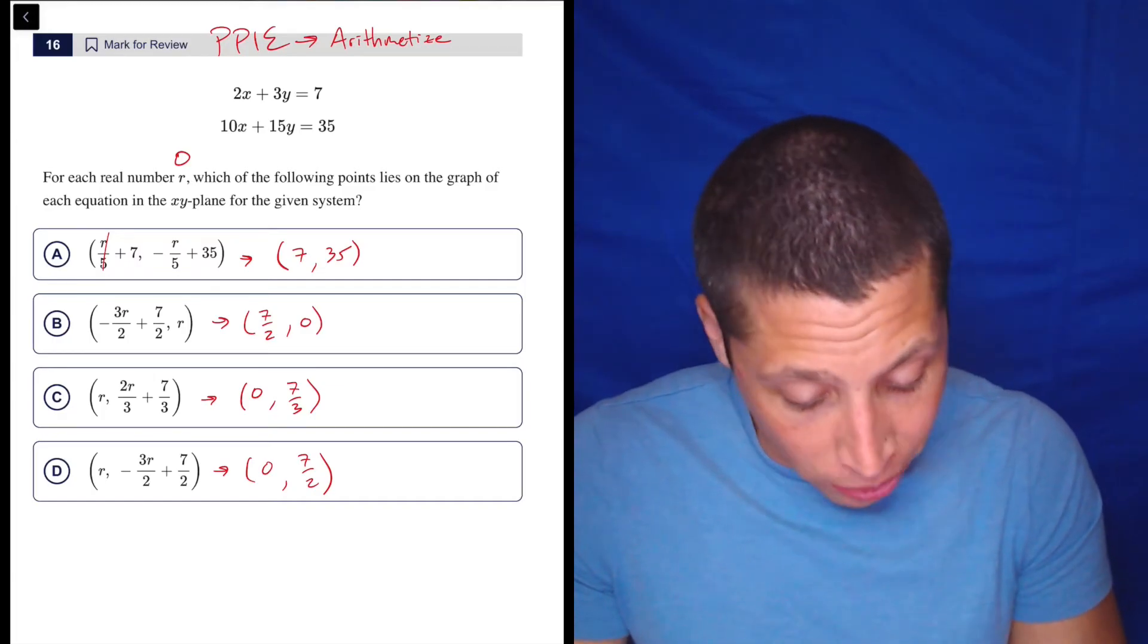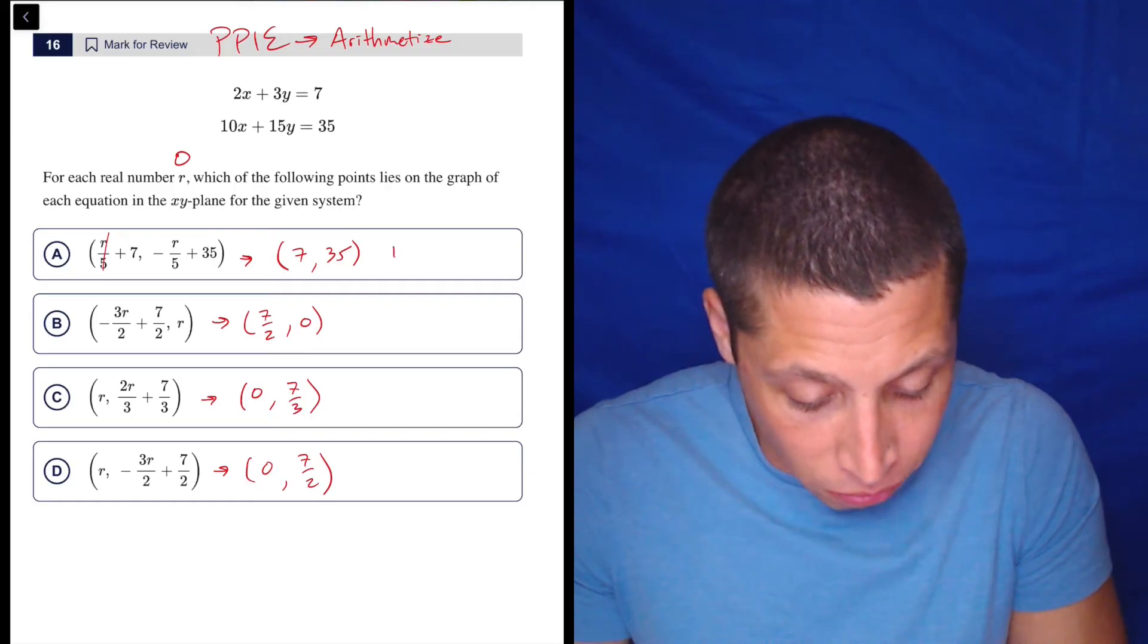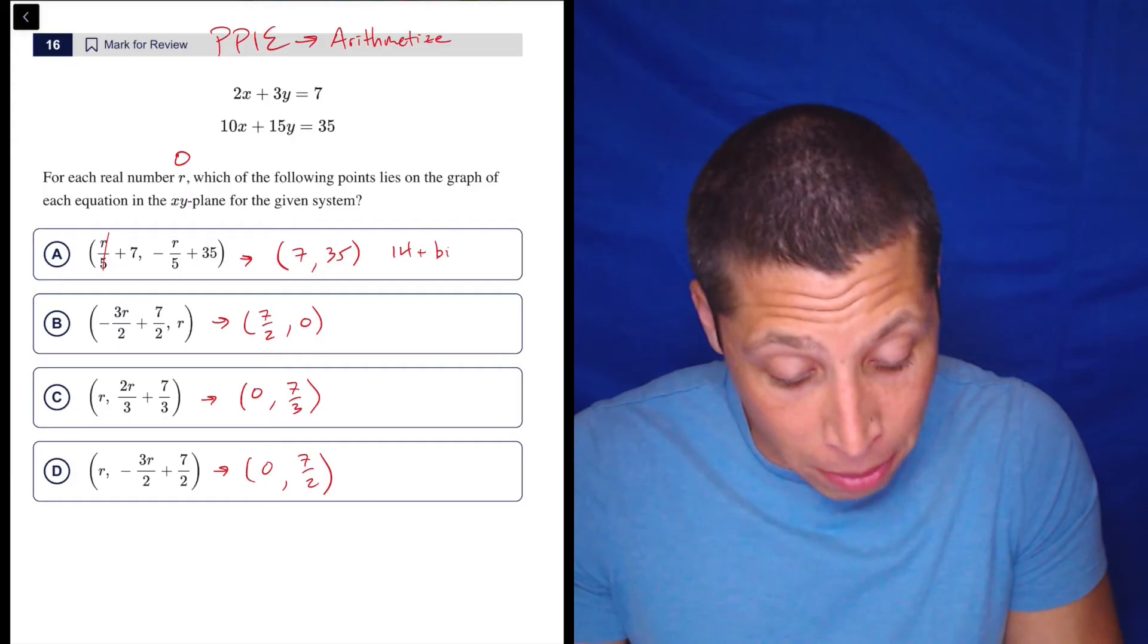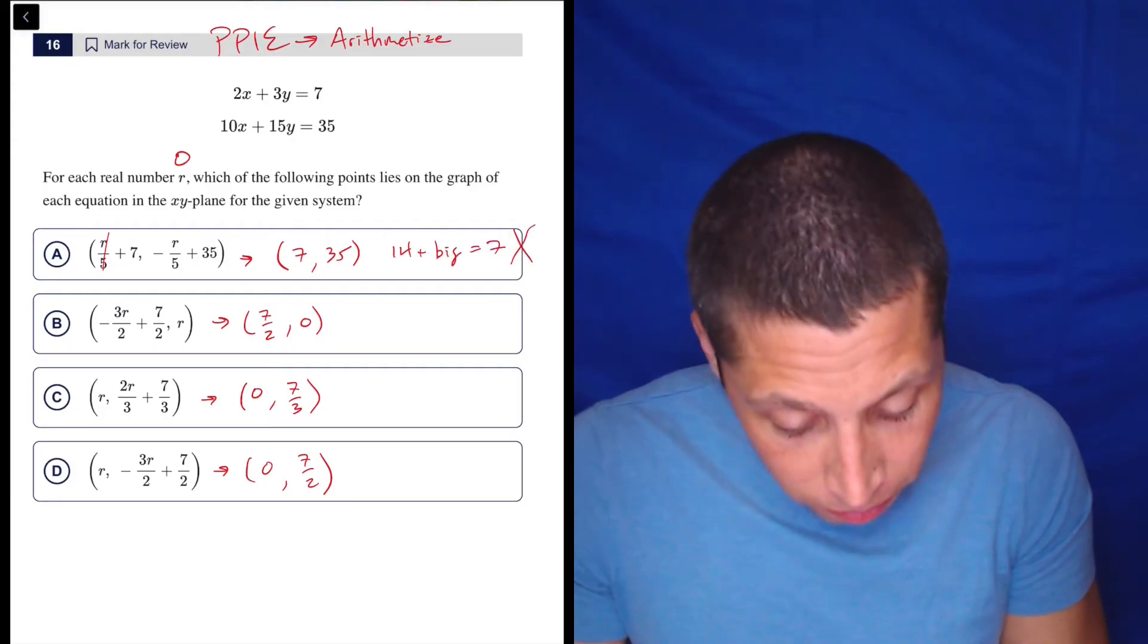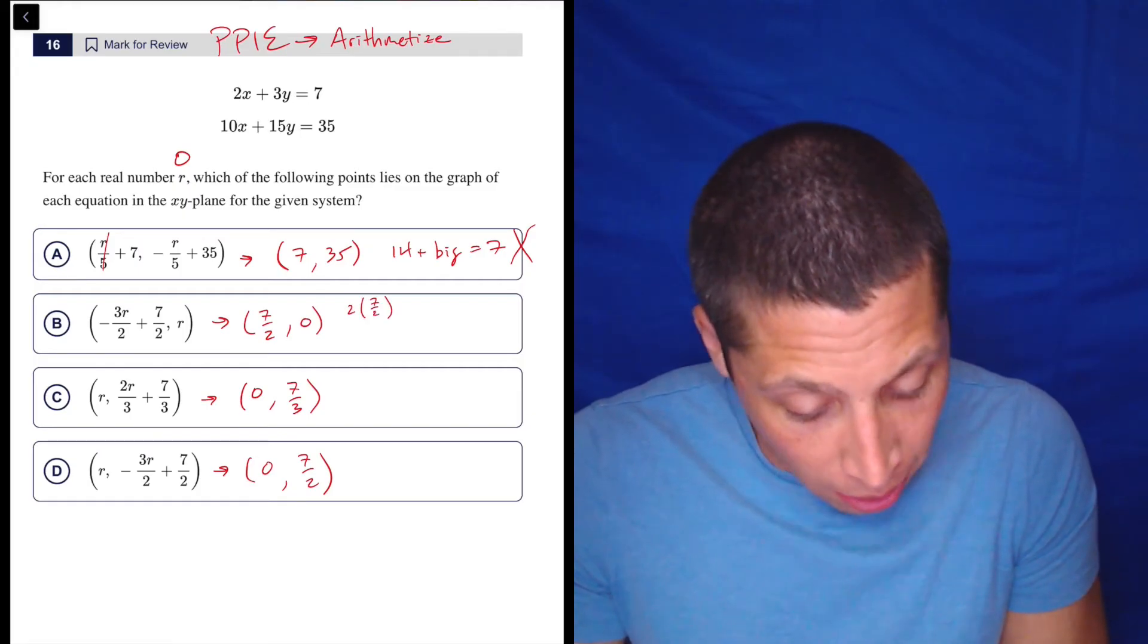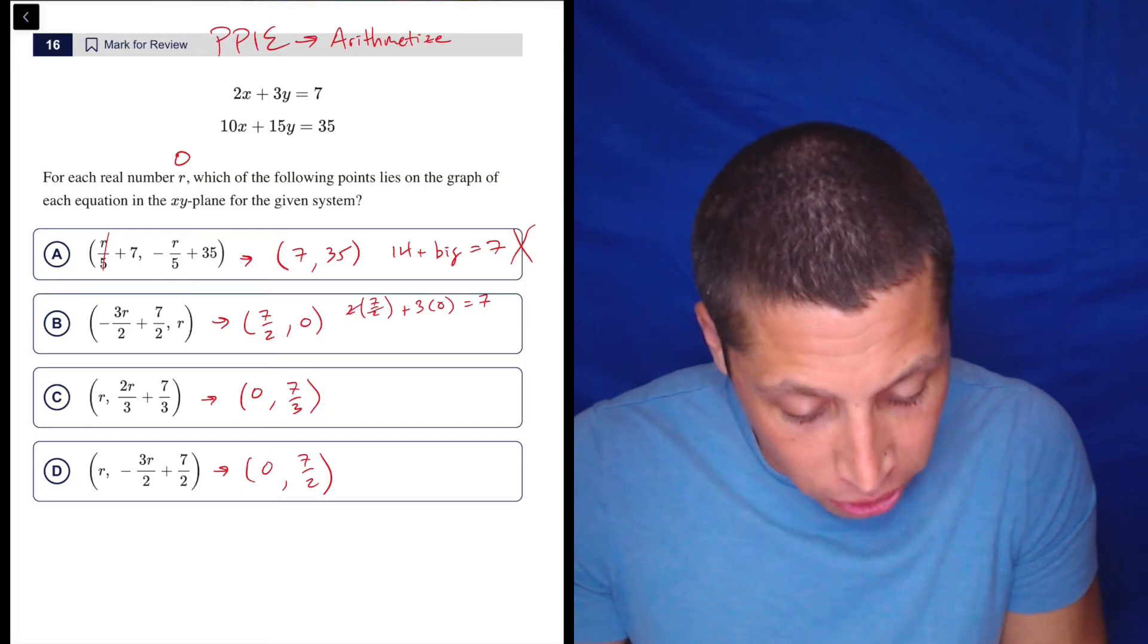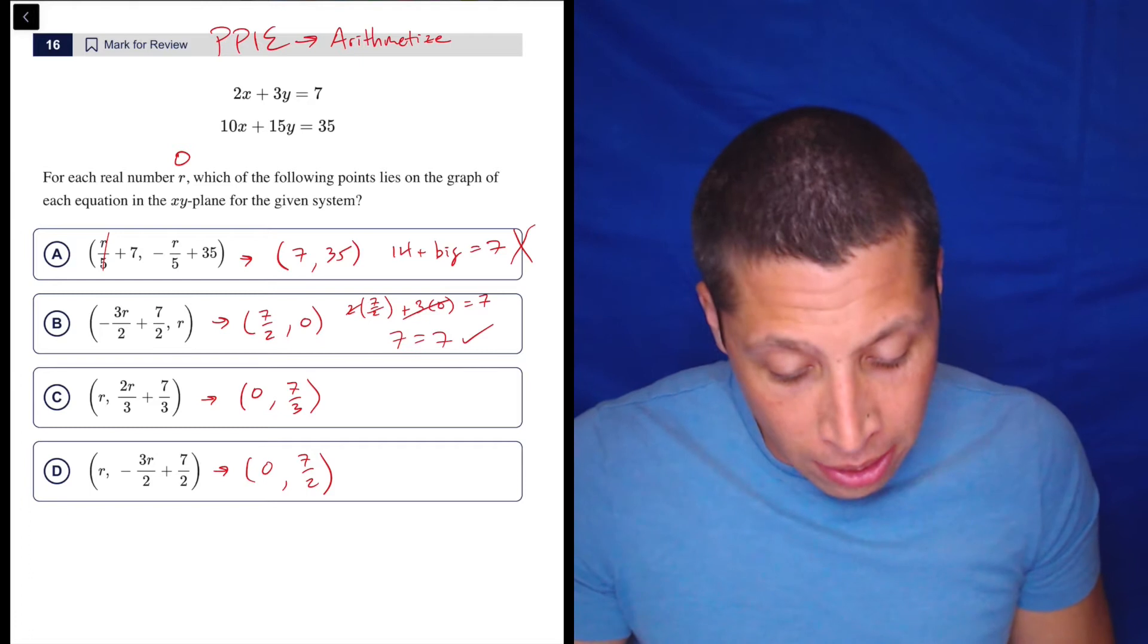Let's just plug them in. So if we did the top equation, since the numbers are smaller, with choice A, that would be two times seven is 14 plus, I don't know what three times 35 is. It's big, and that's not going to equal seven. So it doesn't work. Here, if we did two times seven halves plus three times zero equals seven, the twos are going to cancel. This goes away because of the zero. So this gives me seven equals seven. So that seems good.